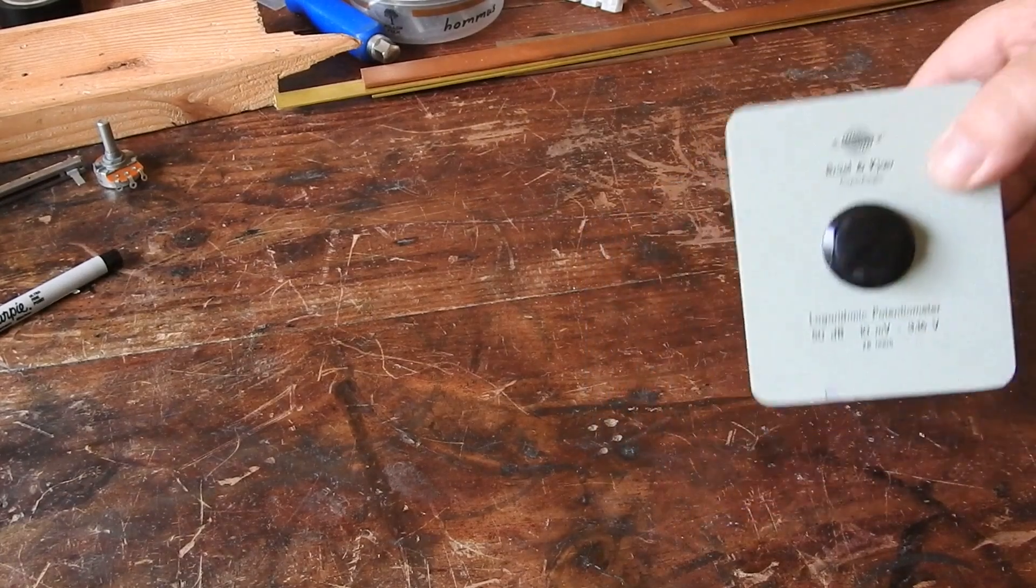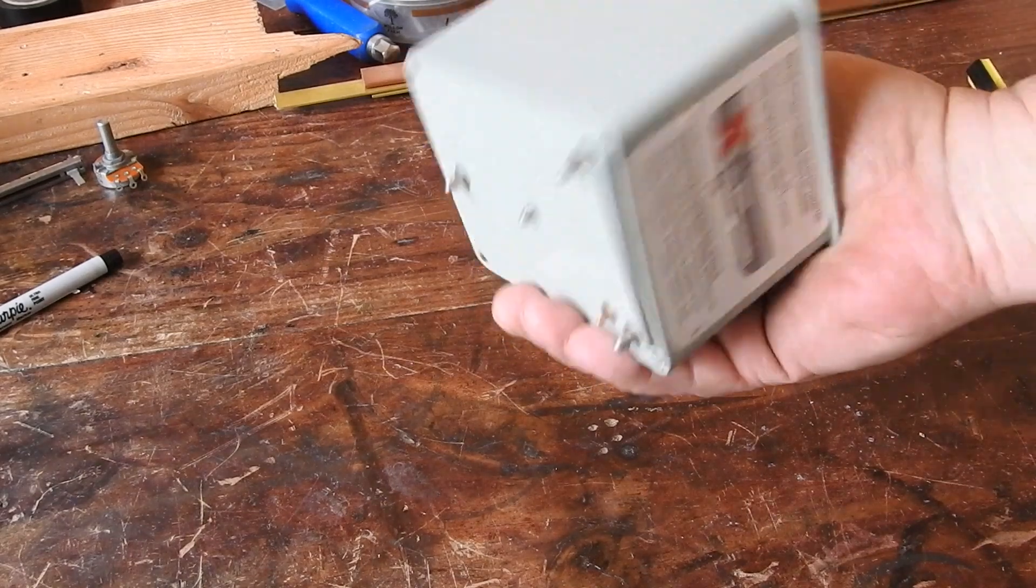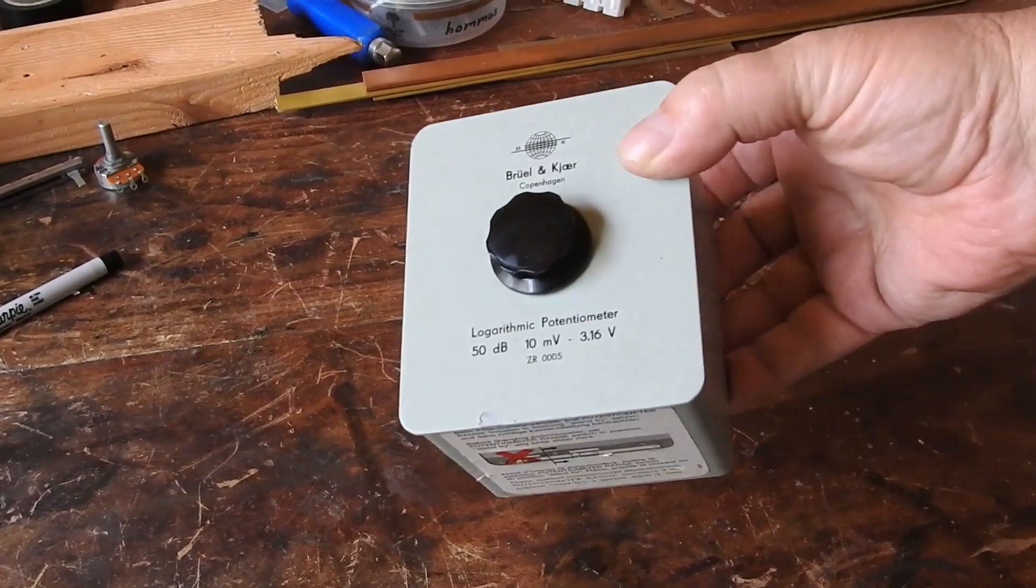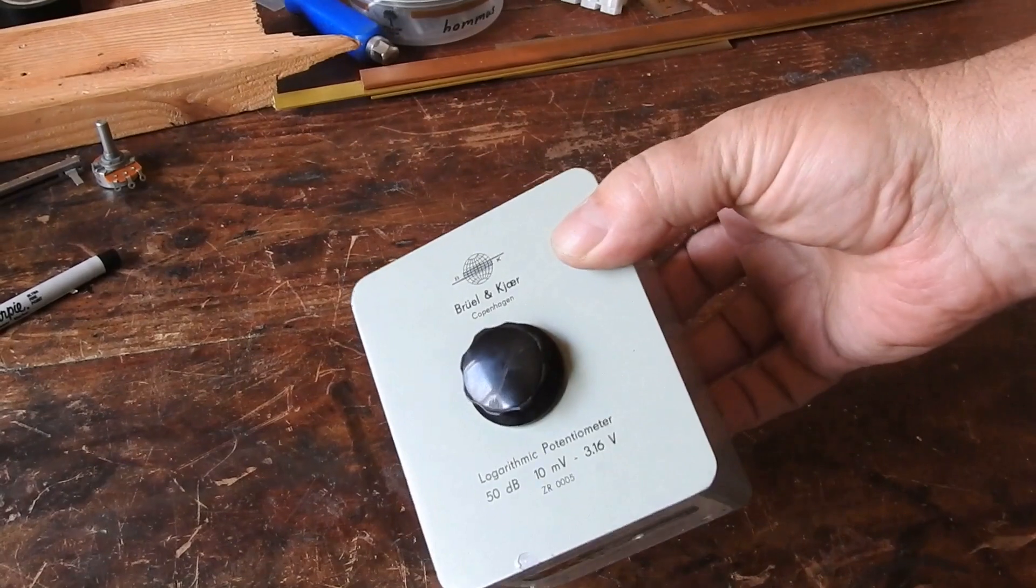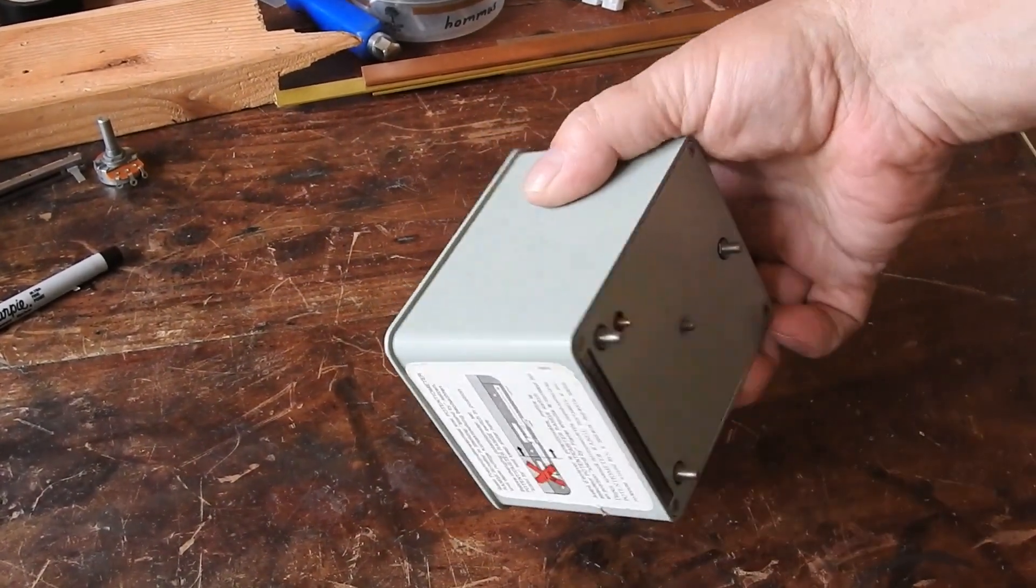Now a while ago I scored a whole bunch of Bruel & Kjær gear. I don't know if it's broken or not. I think it was just thrown out due to being surplus to requirements.